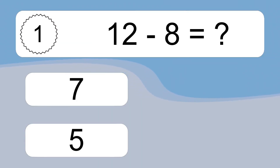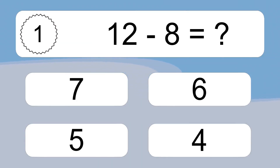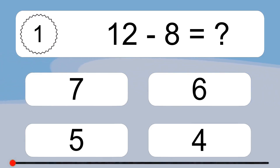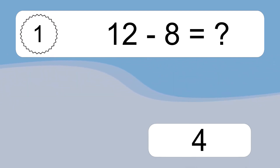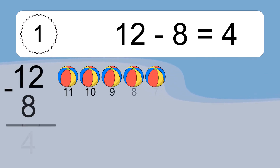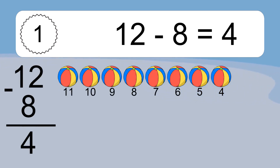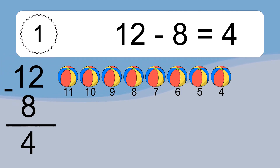12 minus 8 equals what? 12 minus 8 equals 4. Let's count it: 11, 10, 9, 8, 7, 6, 5, 4.